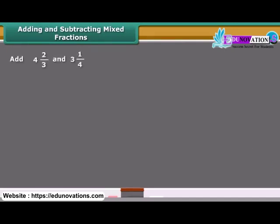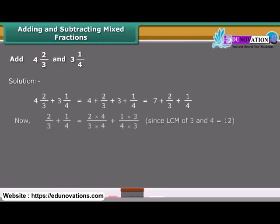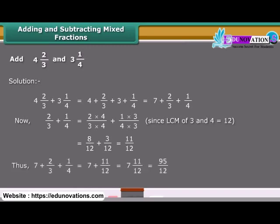Mixed fractions can be written either as a whole part plus a proper fraction, or entirely as an improper fraction. One way to add or subtract mixed fractions is to do the operation separately for the whole parts and the fractional parts. Another way is to write the mixed fractions as improper fractions and then directly add or subtract them.